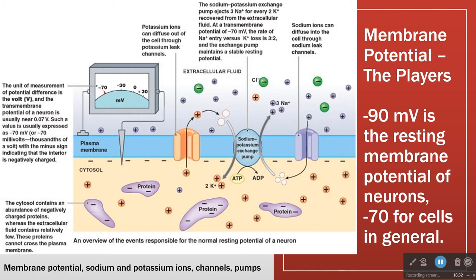The cell needs to have low sodium inside and high potassium inside. So in comes the sodium-potassium pump, which pumps out sodium and pumps in potassium — that is opposite the concentration gradients. That's why we call it a pump: it uses ATP to push molecules up their concentration gradient.